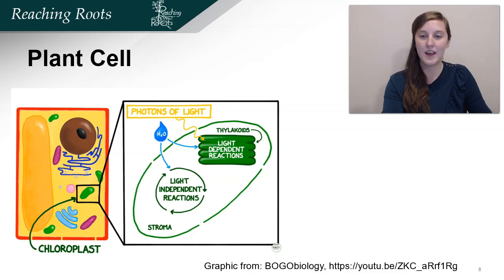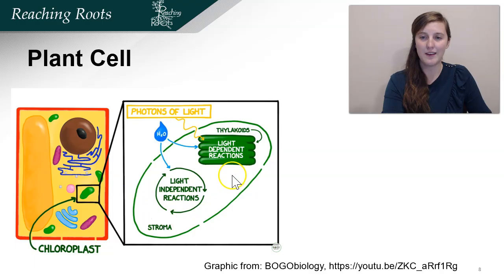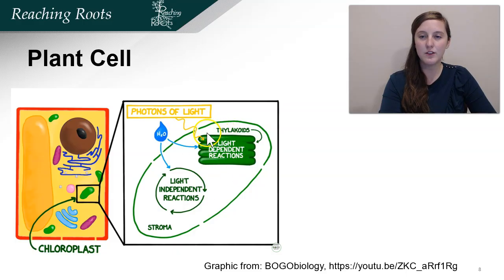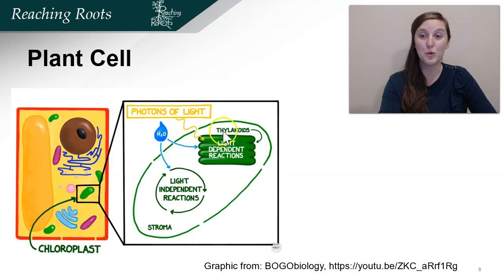Where is this whole process happening? It's happening within the plant cell, which we see here, and specifically in the chloroplast, this green organelle. Inside the chloroplast there's a lot of space — the white space — where important processes happen. This is called the stroma. And then you'll see these stacks, which are called thylakoids. What we're going to talk about today happens inside the interior of the thylakoids. We're going to zoom into this membrane, this green line on the screen, to learn about the process of the light reactions.